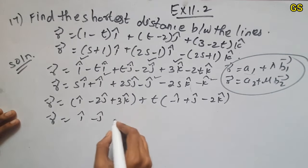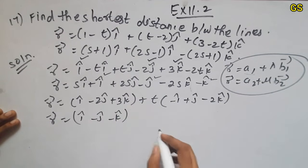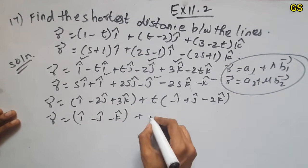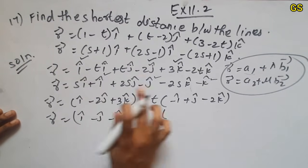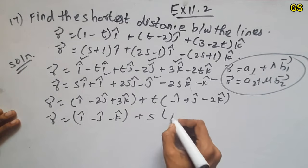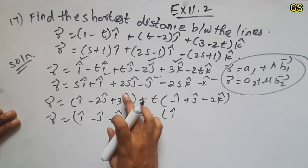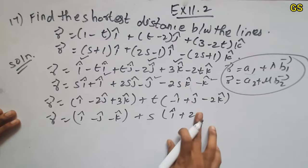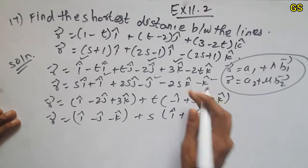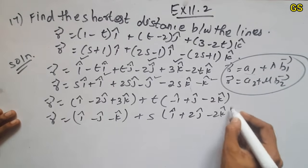This is normal i, j, k. i minus j minus k, right? Plus mu. This is mu. i, next this is 2s, this is 2j, this is minus 2k, right?